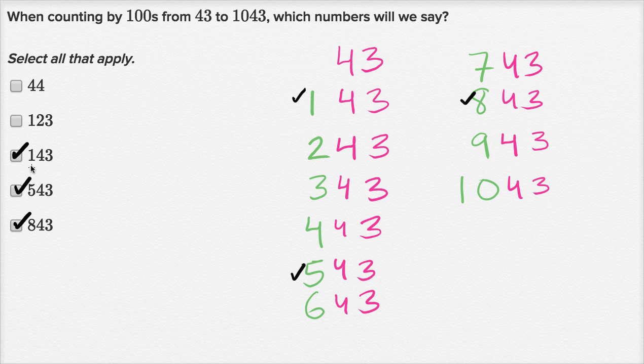These are the numbers that we said when we counted from 43 to 1,043. These are three of the numbers that we said.